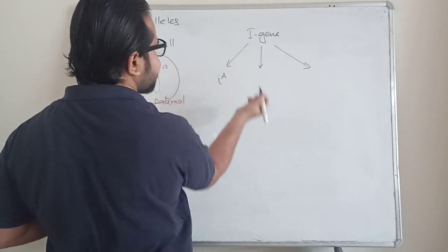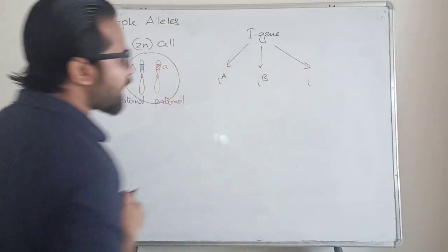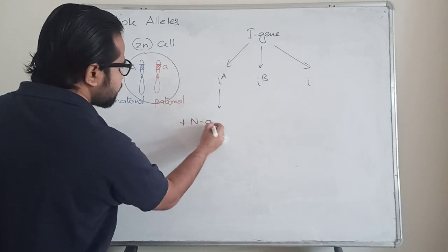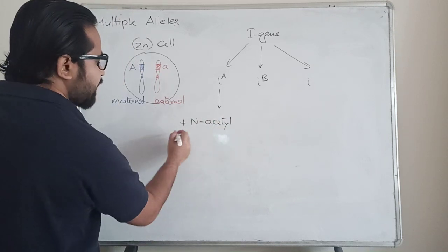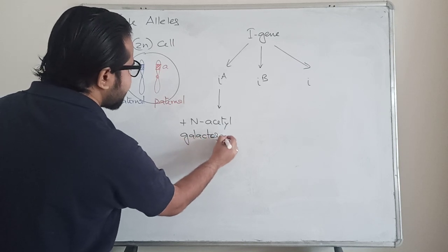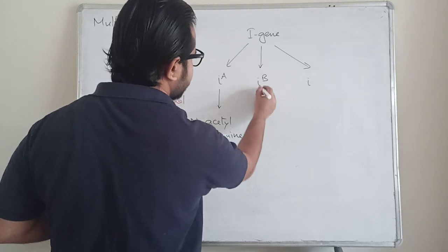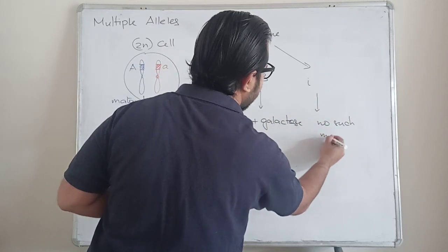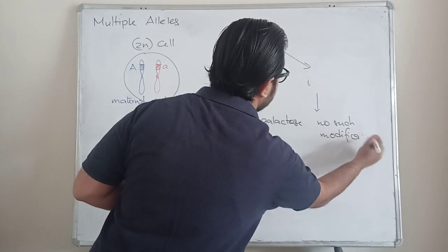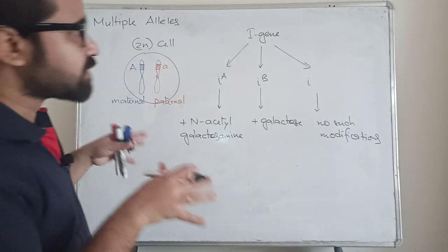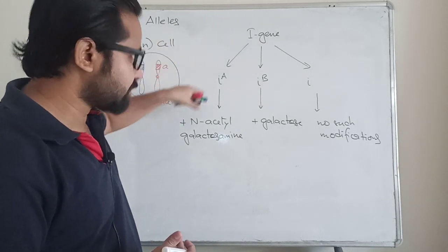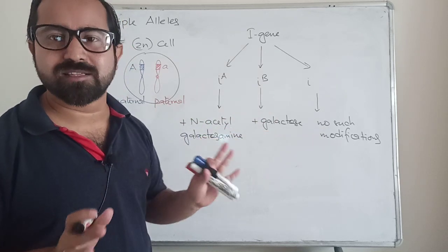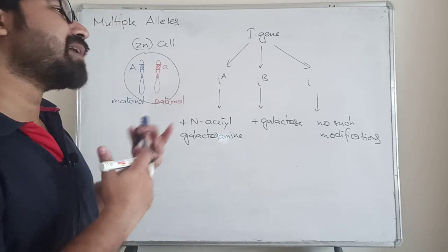The three variants are: I-A, I-B, and i. The first one, I-A, can add a very unique sugar on the RBC cell surface — it adds N-acetylgalactosamine. I-B adds simply galactose. And i makes no such modification — there is no sugar added to the RBC cell surface.